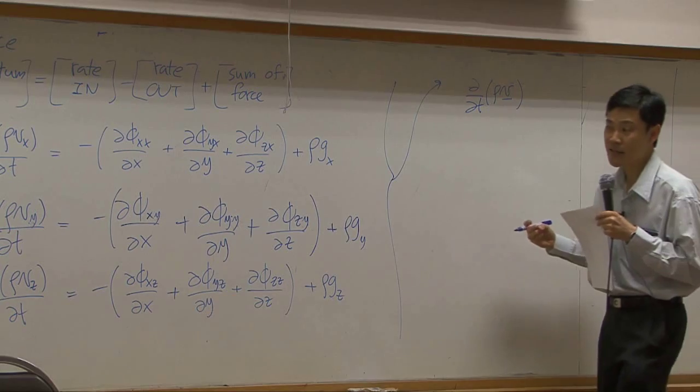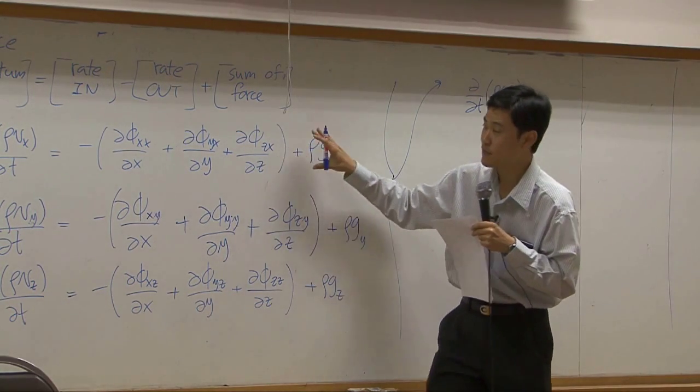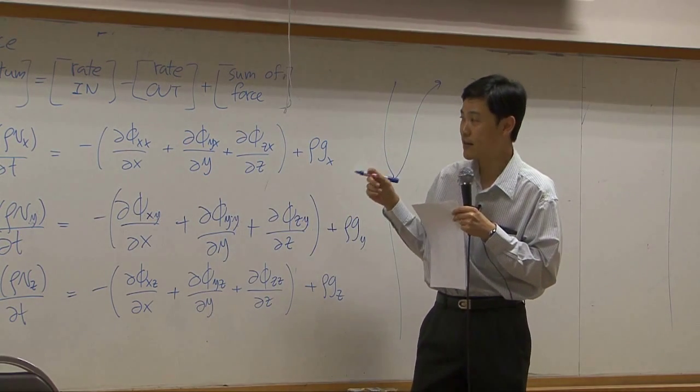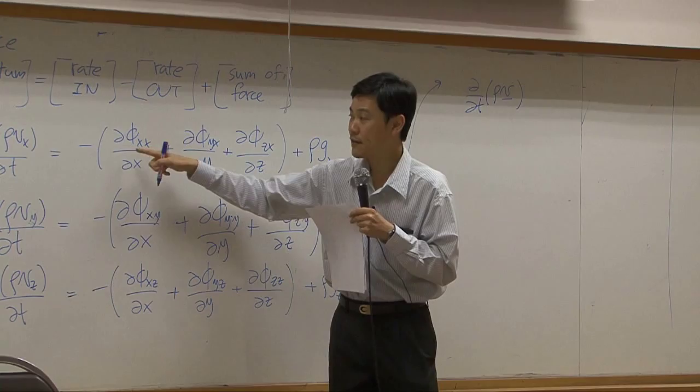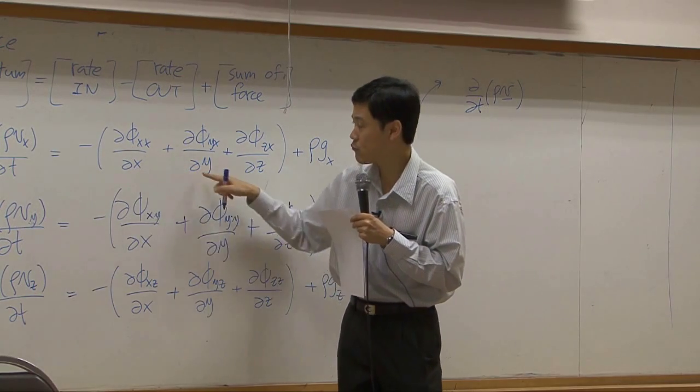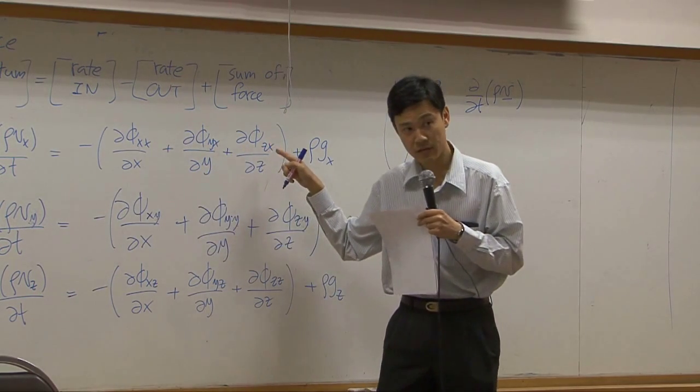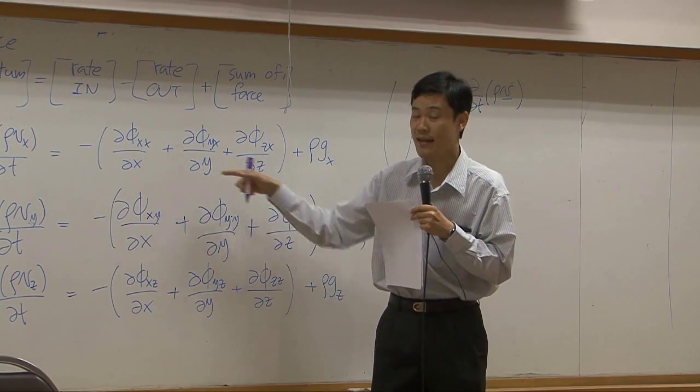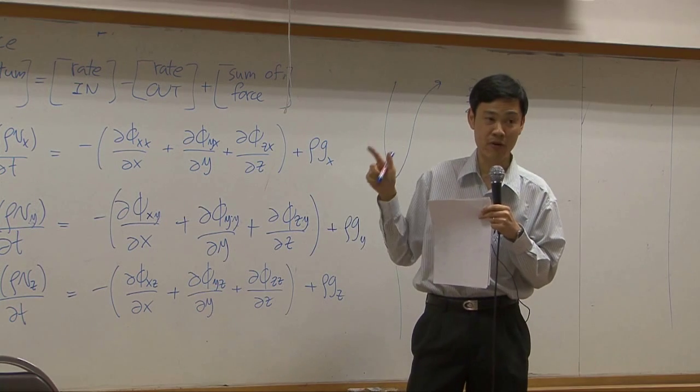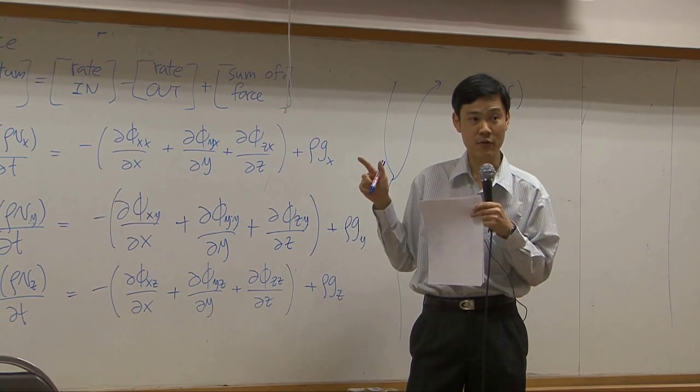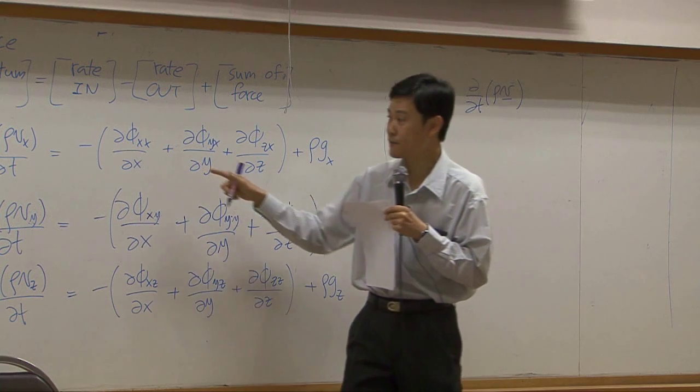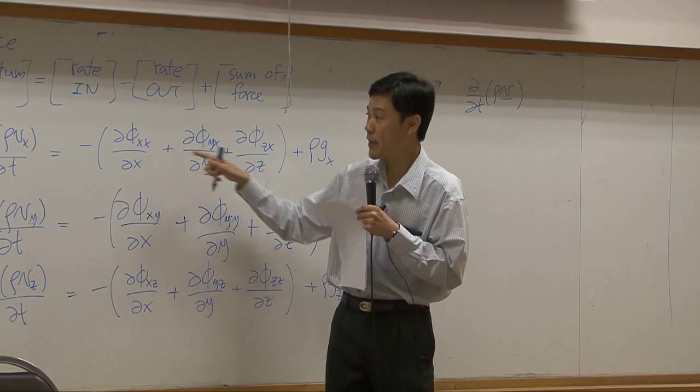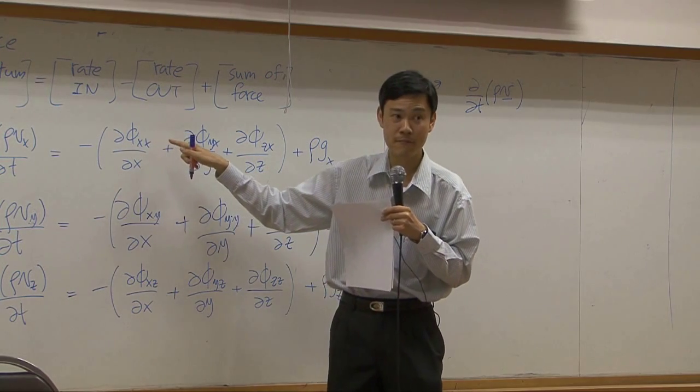Same thing here. For the second term, the term within the parenthesis, you can think like this. It looks like differentiation with respect to x, y, and z of each component and sum them together. This kind of thing looks just like dot product. It's just like dot product. Dot of del, which is operator differentiation, dot it with phi.